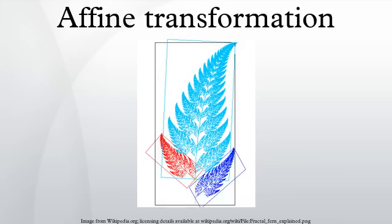Every linear transformation is affine, but not every affine transformation is linear. If X and Y are affine spaces, then every affine transformation is of the form, where f is a linear transformation on X and t is a translation vector. Unlike a purely linear transformation, an affine map need not preserve the zero point in a linear space. For many purposes an affine space can be thought of as Euclidean space, though the concept of affine space is far more general.